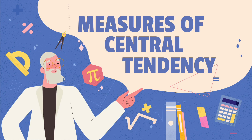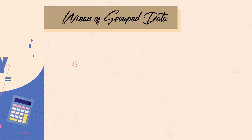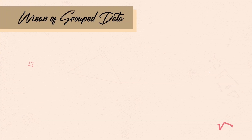Welcome to the second part on the discussions of measures of central tendency. This time we'll have the grouped data. We'll still use the same frequency distribution of ages of 40 diabetics. We begin with the mean of grouped data.